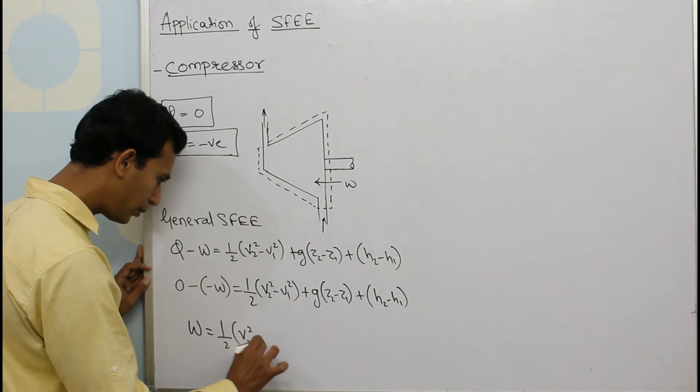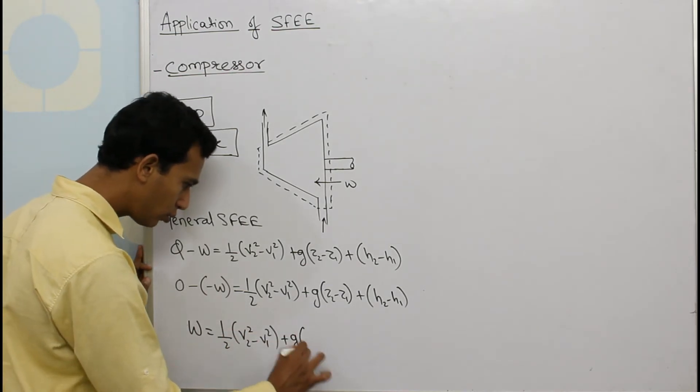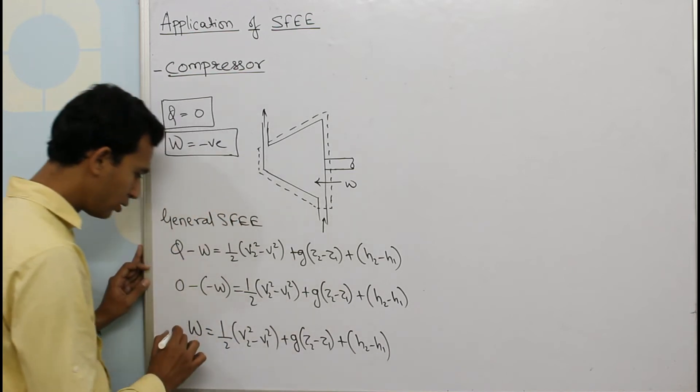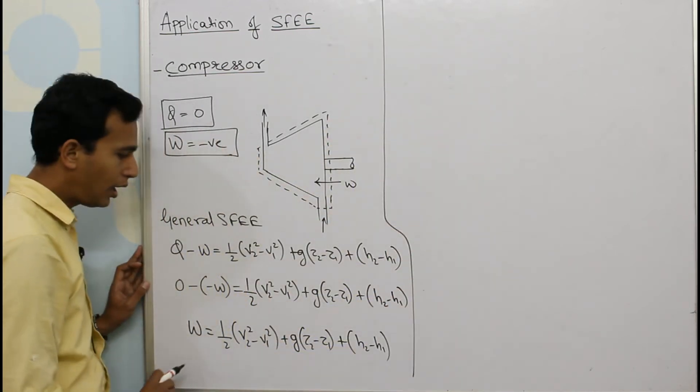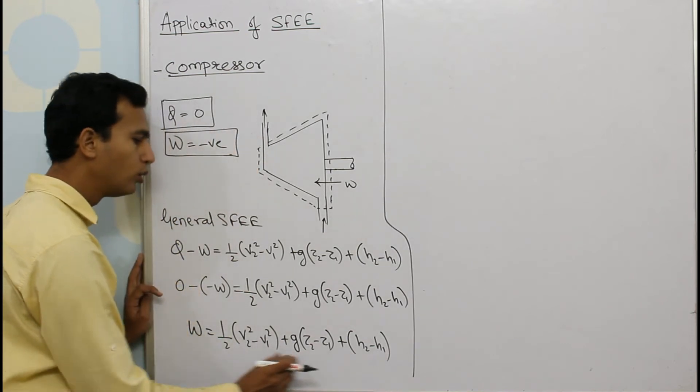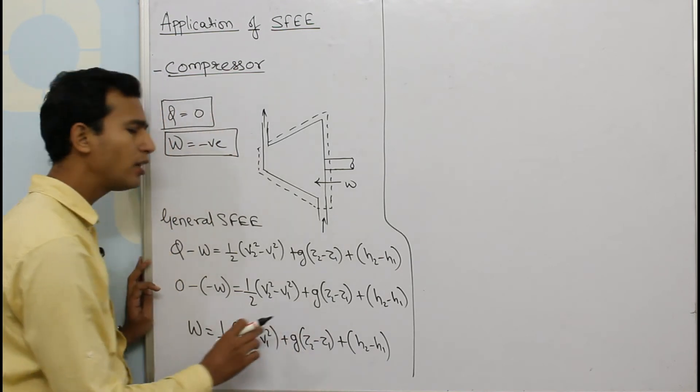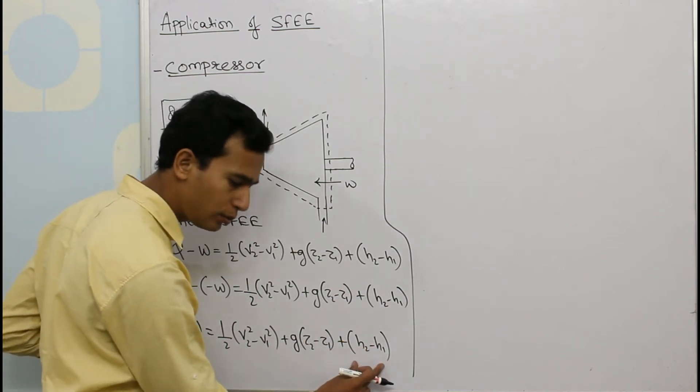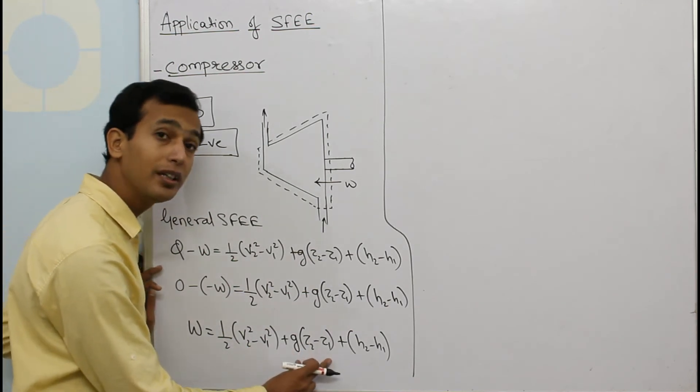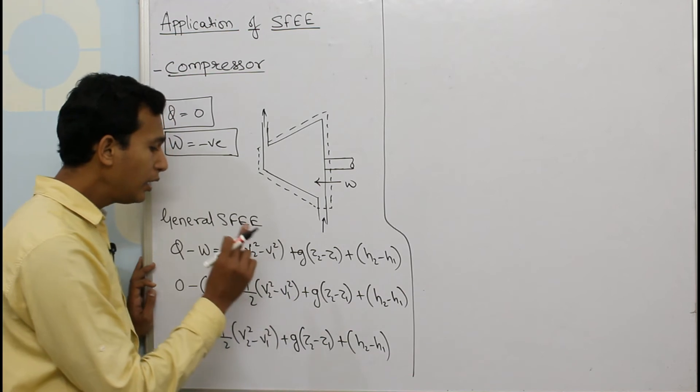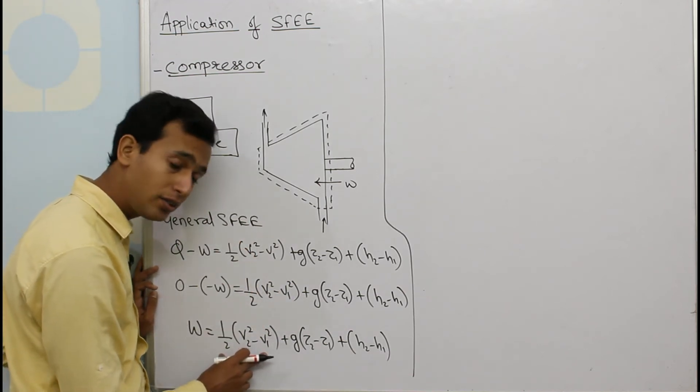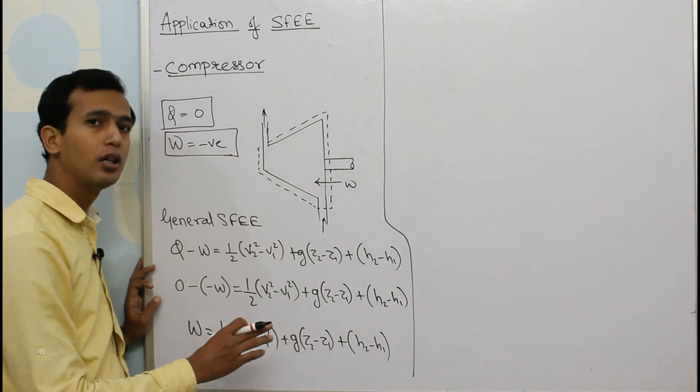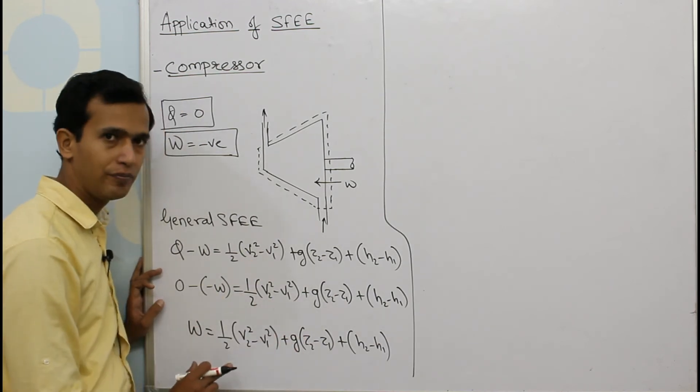So this is the equation. Now as compared to the change in enthalpy, these two terms are negligible. Now whenever I say these are negligible, it means the values should not be considered when the change in enthalpy is to be calculated and nothing is mentioned about these two terms in the numerical. Wherever in a question if there are certain values given for velocities and heights, or change in potential energy and kinetic energy, these words are mentioned, the values are given, then we cannot neglect them. They have to be considered. But in general, we can neglect.